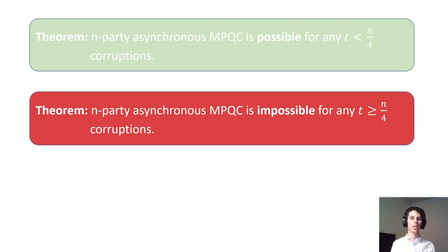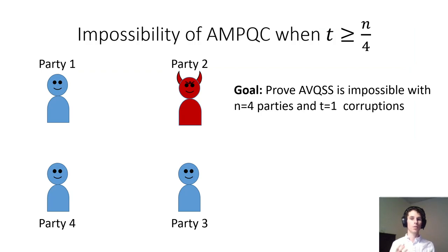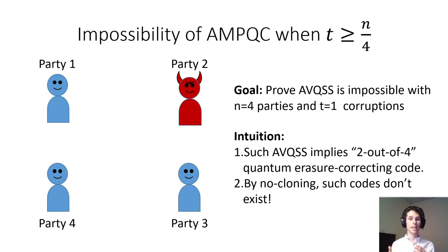I'll now discuss the impossibility result. We will just focus on the verifiable secret sharing functionality. We want to show that it is impossible to achieve verifiable secret sharing for even one-fourth corruptions. By standard arguments, it is enough to argue impossibility for four parties and one corruption. Intuitively, we can show that a verifiable quantum secret sharing scheme for this scenario implies a quantum erasure code which can correct two erasures in four shares. If it did, then we could clone quantum states by encoding them into four shares and then reconstructing the state using two sets of two shares each, giving us two different copies.